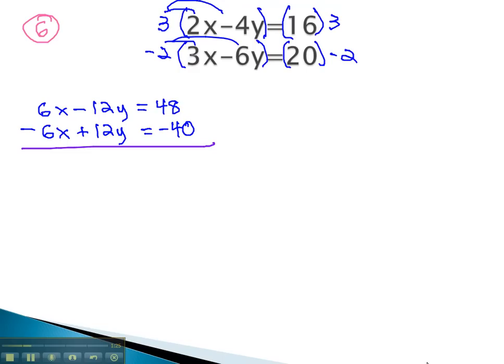We're ready to add these together, but notice as we do, the x's subtract out and the y's subtract out. All that remains on the left side of the equal sign is 0. 48 minus 40 is 8. The variables have subtracted out completely, and we also notice this is a false equation. 0 does not equal 8.